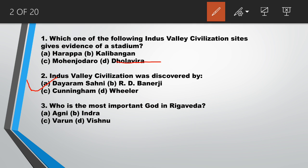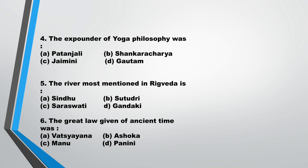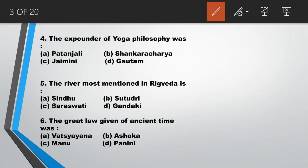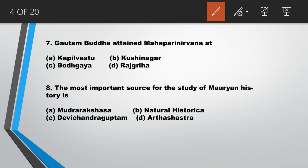Third question: who is the most important God in Rigveda? Answer is B, Indra. Fourth question: the expounder of Yoga philosophy was Patanjali, option A. Fifth question: the river most mentioned in Rigveda is Sindhu, option A.